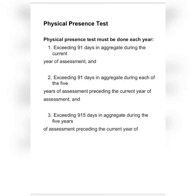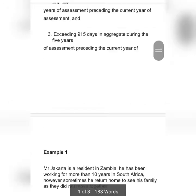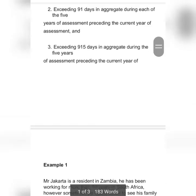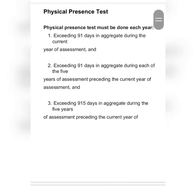Requirement number two says that in the last five years he must be in South Africa for more than 91 days each and every year. We check from 2020 — we do not count the current year. In 2020 he stayed 270 days — that's fine. In 2019 he stayed 130 days — more than 91. In 2018, 2017, and 2016 it's also fine. In the previous five years he stayed more than 91 days each year, so requirement number two is met.